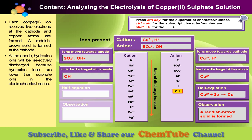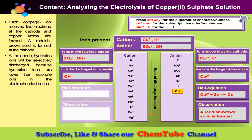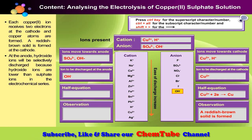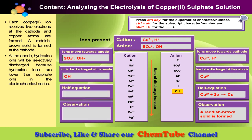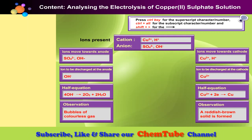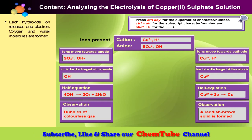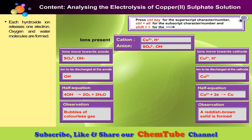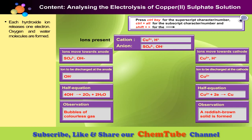At the anode, hydroxide ions will be selectively discharged because hydroxide ions are lower than sulfate ions in the electrochemical series. Write the half equation and observation at the anode. Each hydroxide ion releases one electron at the anode, and oxygen and water molecules are formed.